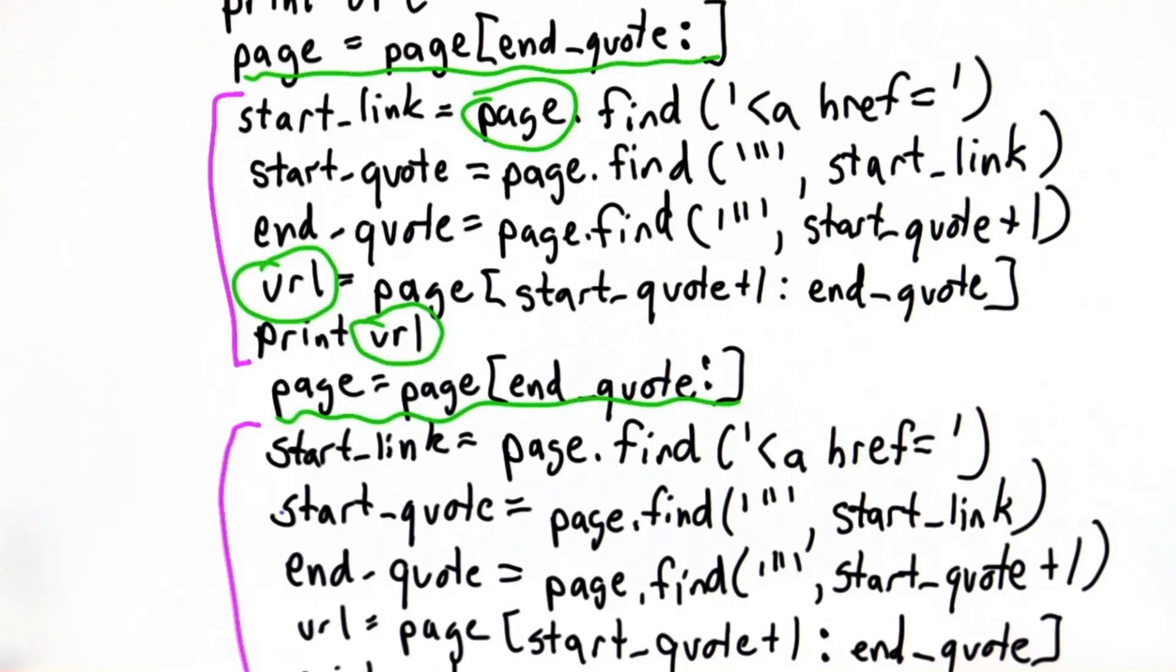Let's go back to the code we have for extracting the first URL in a page and see how we can turn that into a procedure. Remember we made many copies of the same code if we wanted to extract many links from the page.